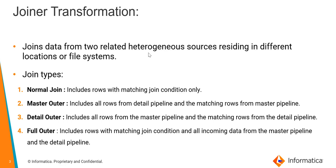Different types of joins available with joiner transformation: First is normal join — it includes rows with matching join condition only and discards rows that do not match. Second is master outer join — it includes all rows from the detail pipeline and only the matching rows from the master pipeline, discarding unmatched master rows. Third is detail outer join — it includes all rows from the master pipeline and only the matching rows from the detail pipeline, discarding unmatched detail rows. Fourth is full outer join — it includes rows with matching join condition and all incoming data from both the master and detail pipelines.